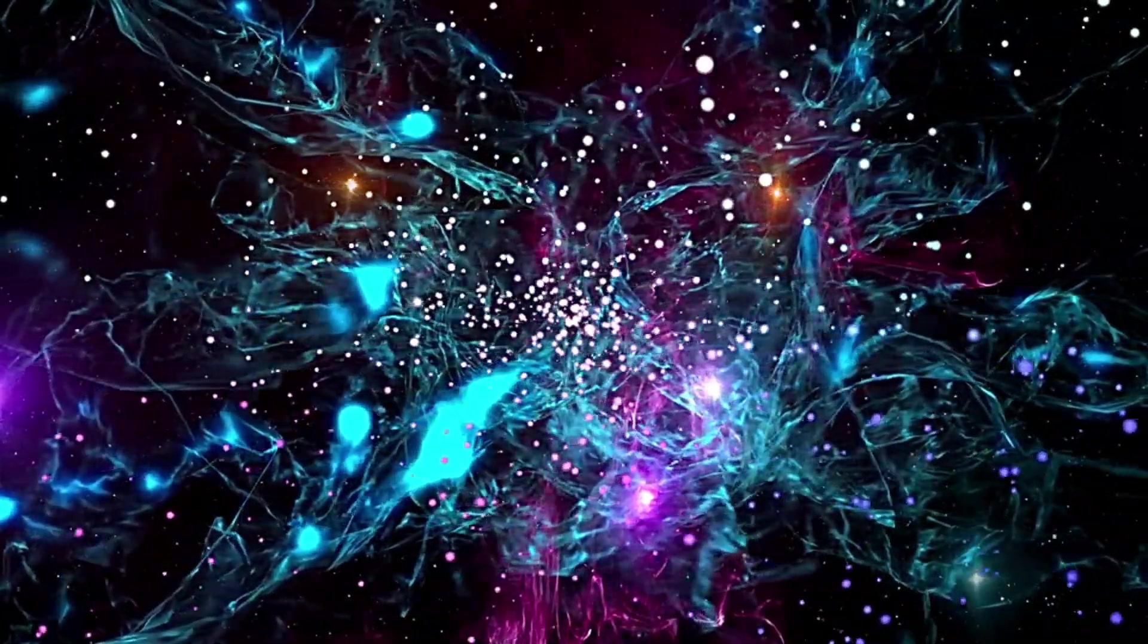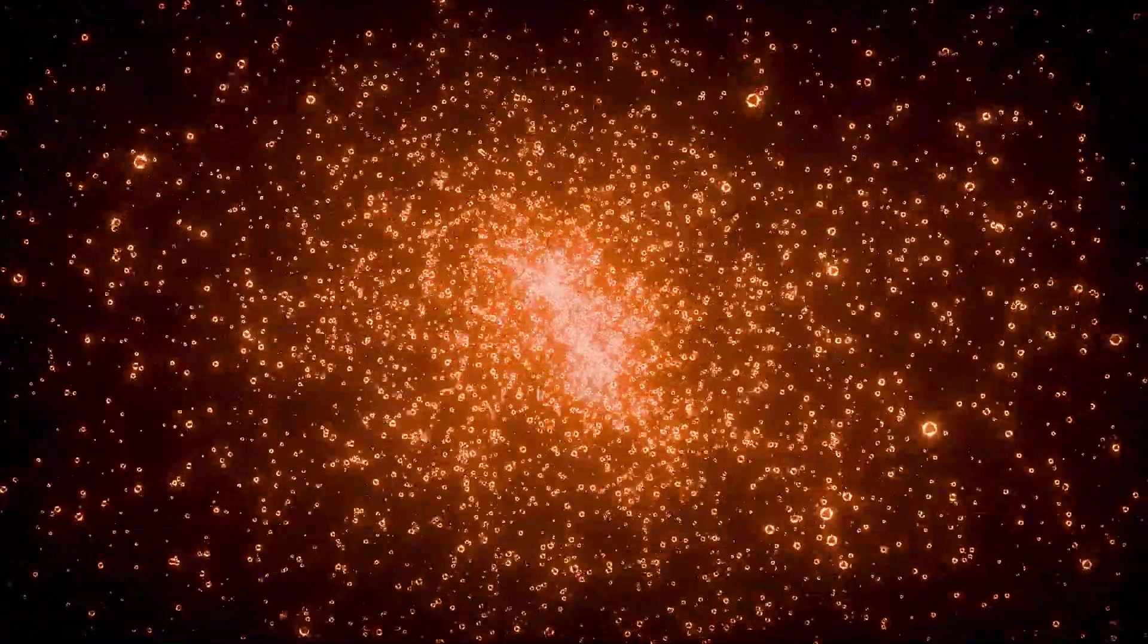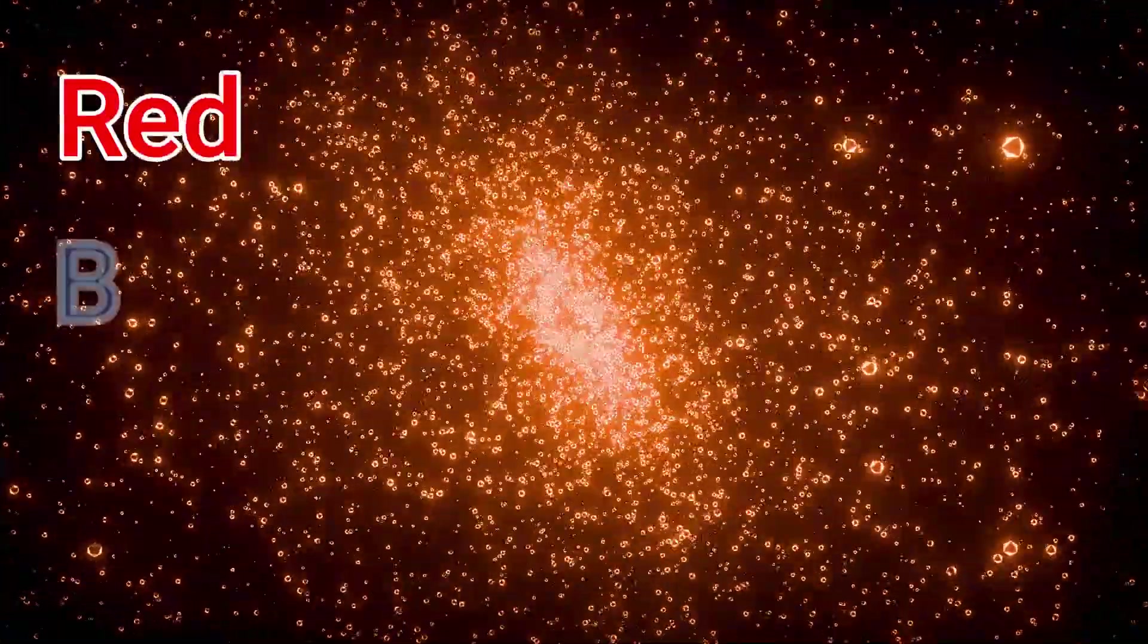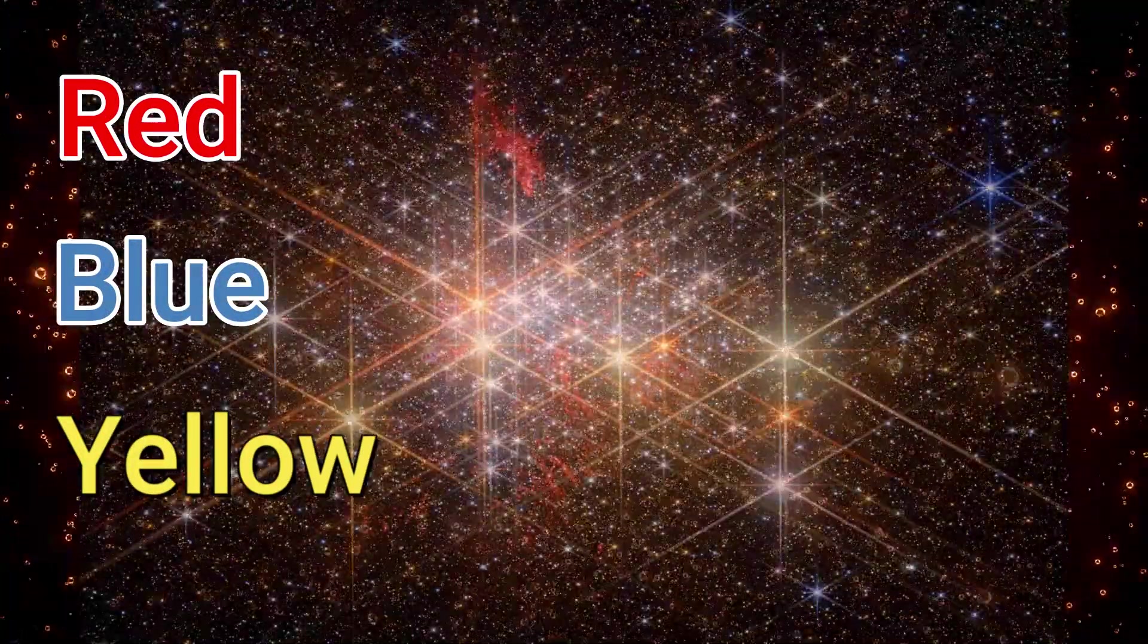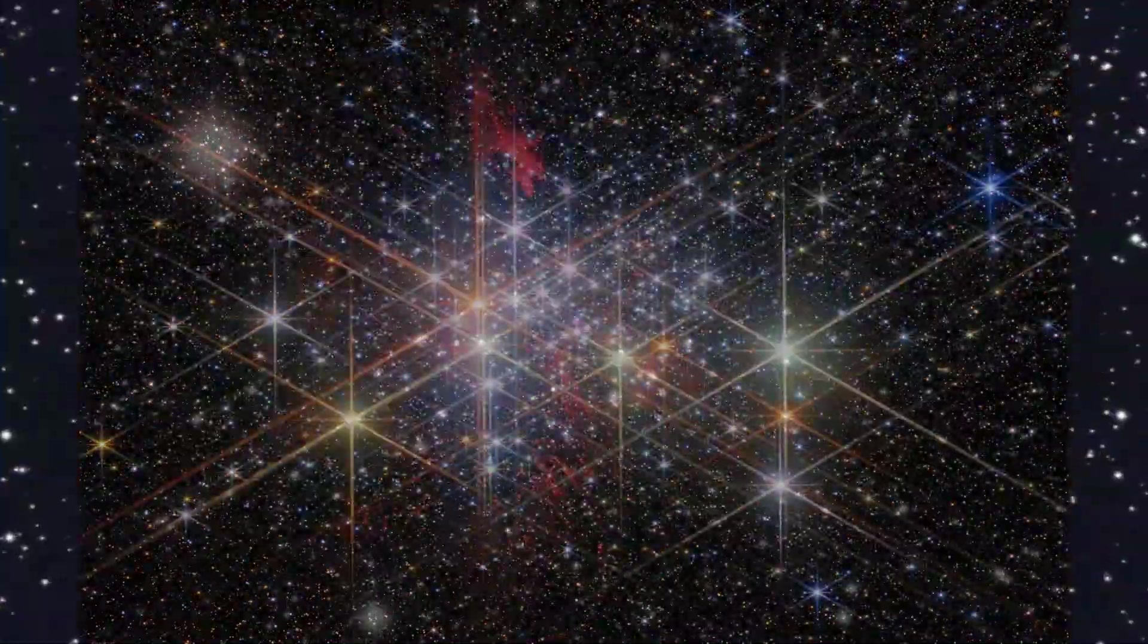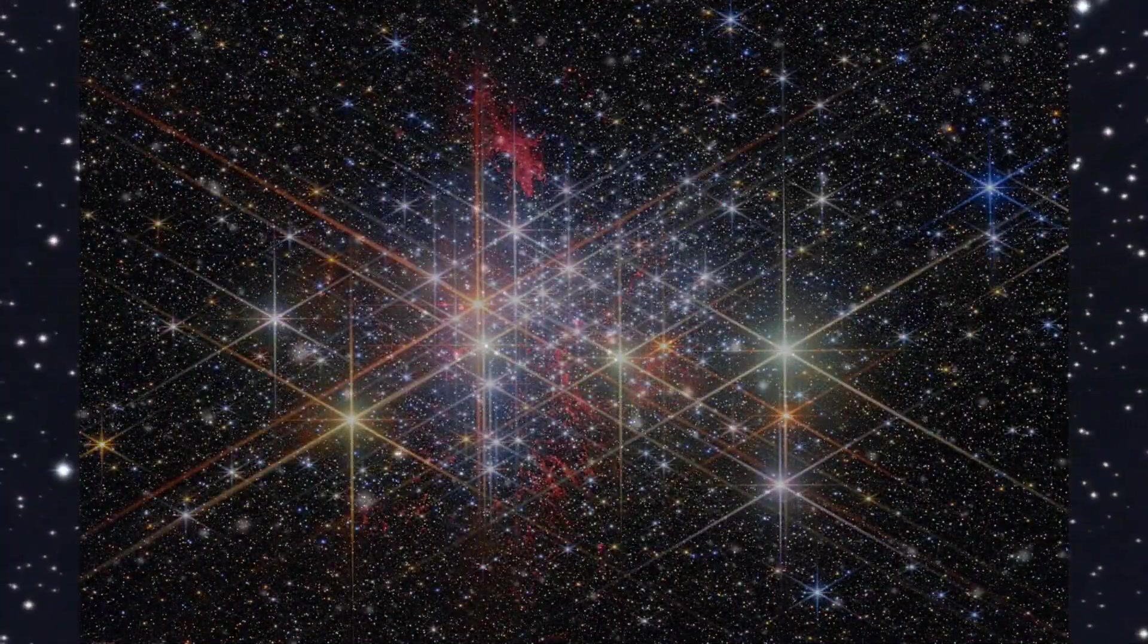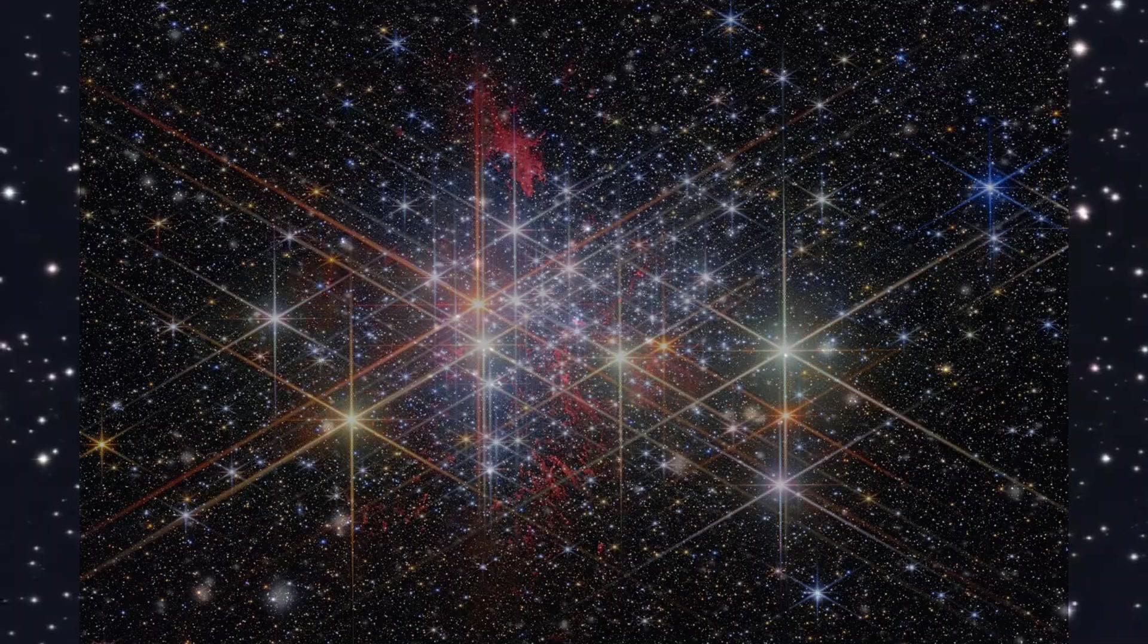These variations help astronomers classify and study the types of stars present. The red, blue and yellow hues indicate stars at different stages of their life cycles. Red stars are generally cooler and older, while blue stars are typically younger, hotter and more massive.